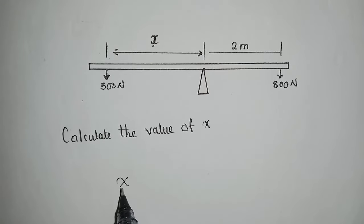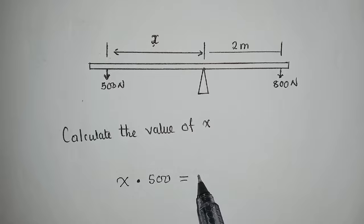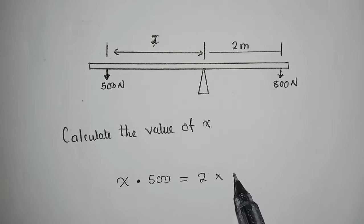We'll say x multiplied by 500 is equal to 2 multiplied by 800. So here we're getting 500x which is equal to 1600.